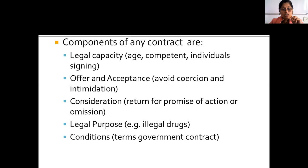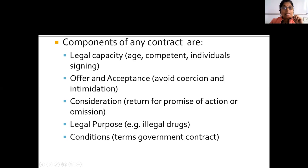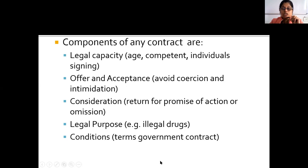A contract should always have a consideration — that is, in return for a promise, whatever has been agreed upon. There should also be a legal purpose for the contract, which should be clearly understood; any illegal entity should not be included. Then conditions: conditions related to rules and regulations governing the aspects for which the contract is being made should be clearly followed. These components should always be present in a contract.